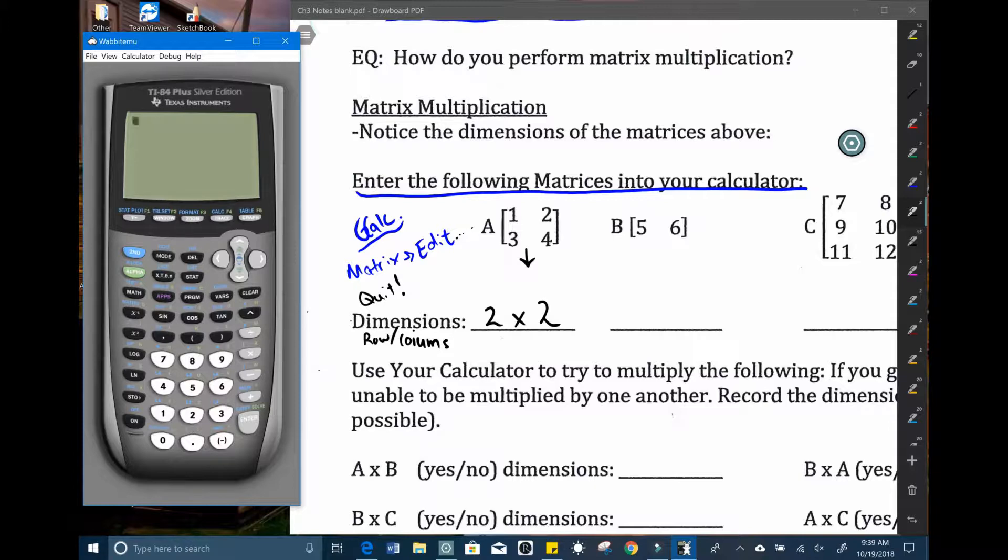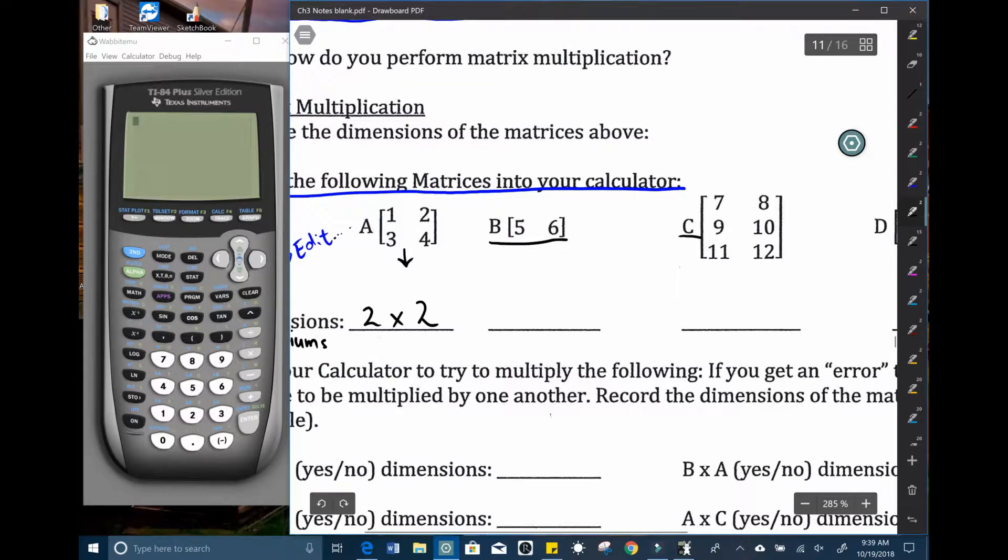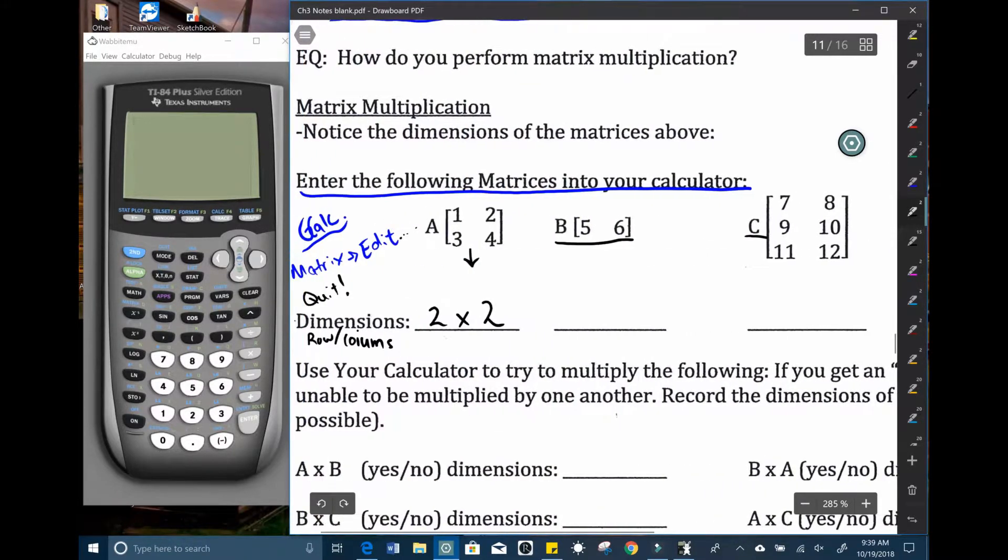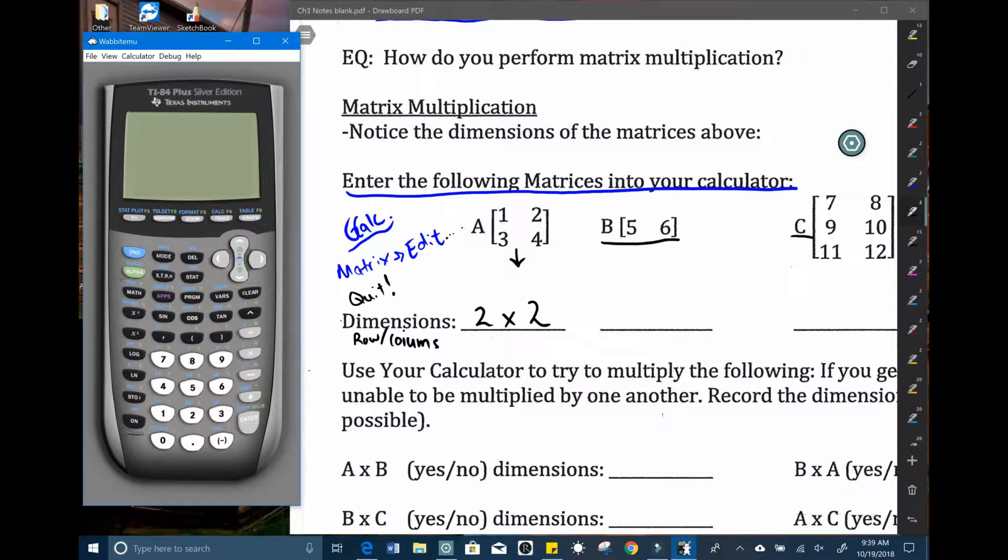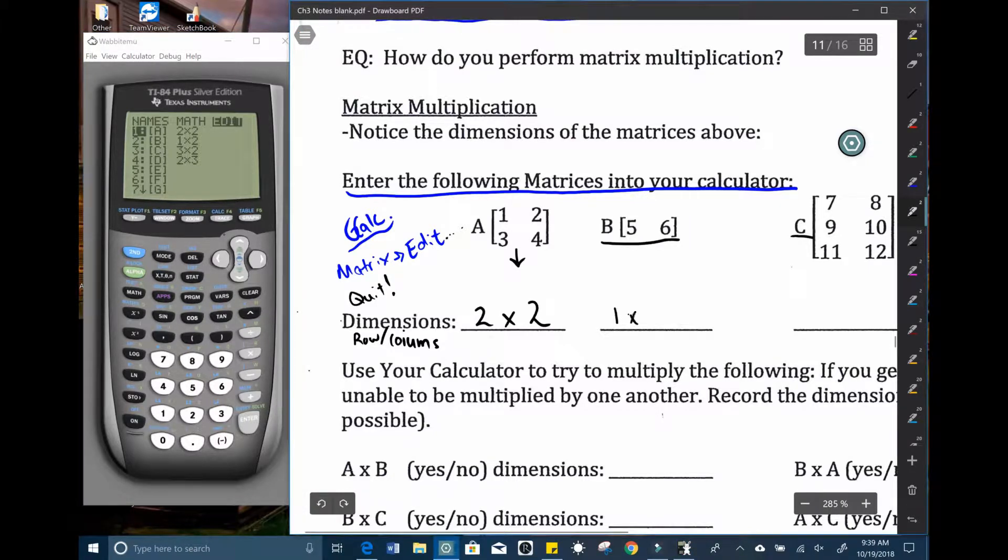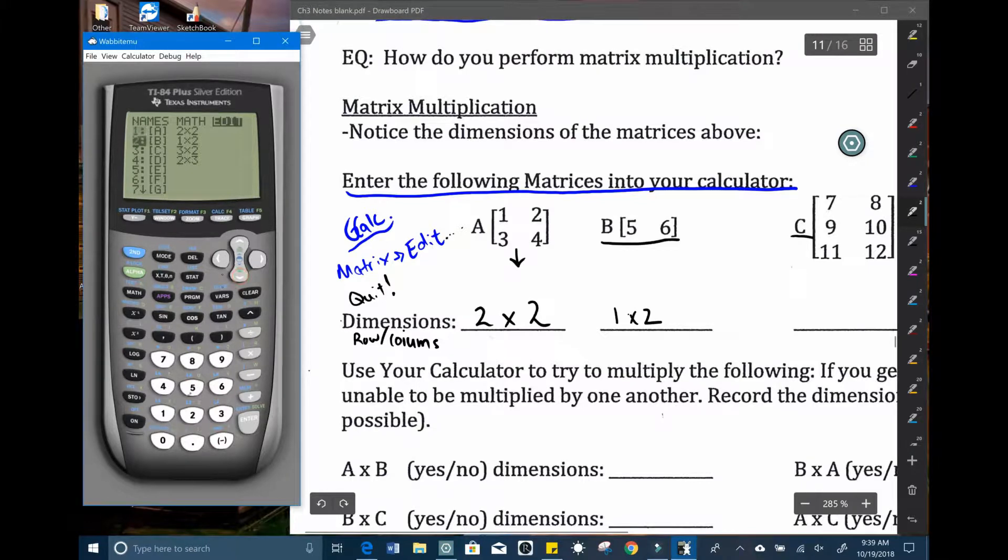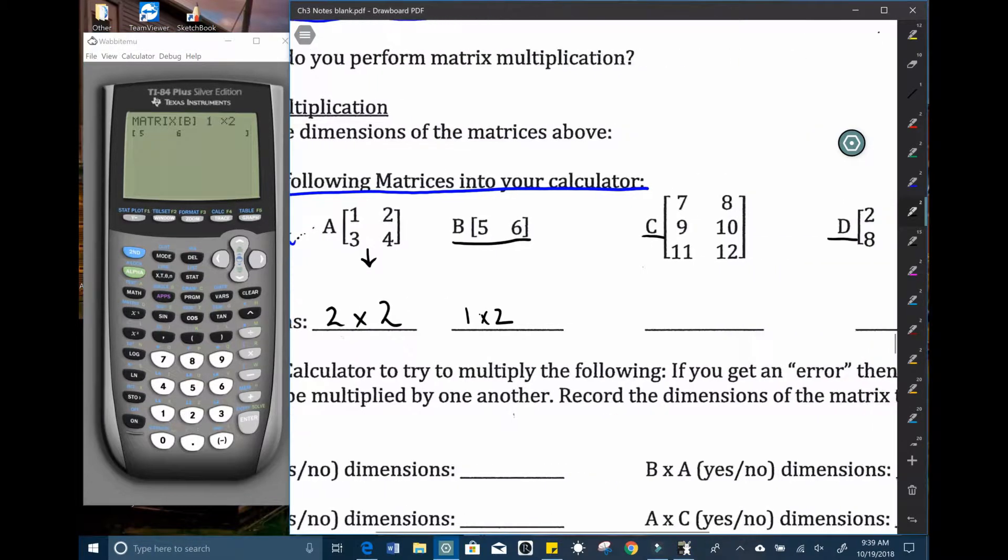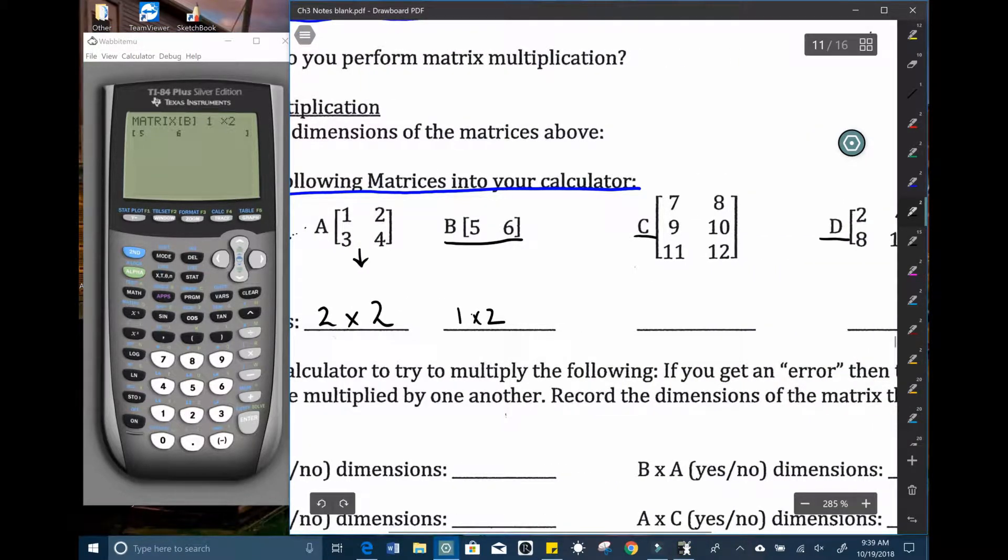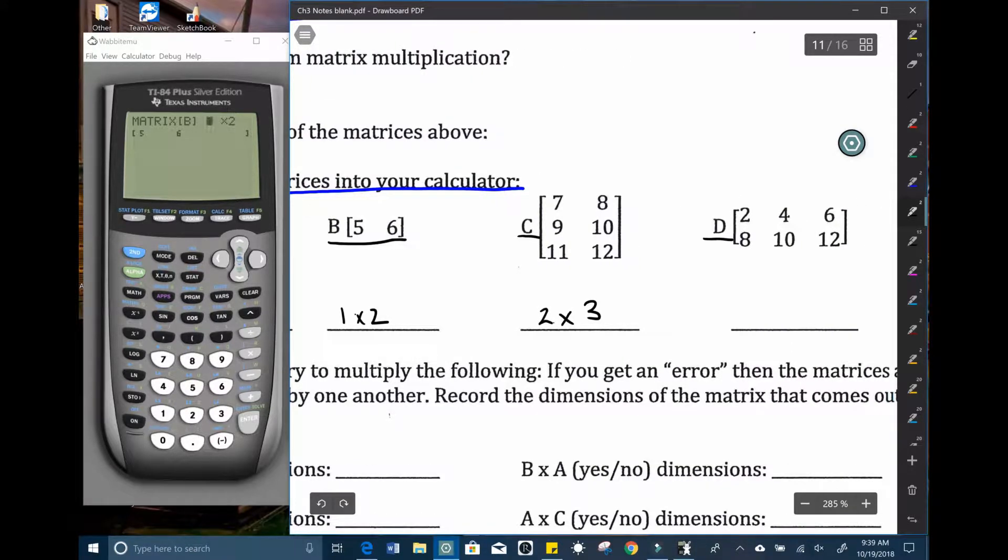Take some time now to enter in matrix B, matrix C, and matrix D. Again the process is second matrix over to edit. Now if you're not familiar this is a one row by two columns. So you go over to edit. This time go down to matrix B and I already have it in there. I'll give you some time. This is a two by three matrix and this is a three by two matrix.